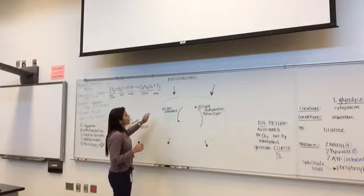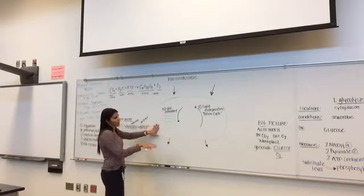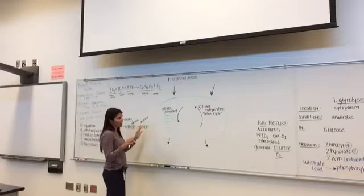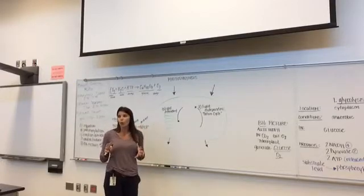And the second process, this occurs in the chloroplast, which we already talked about, occurs in autotrophic organisms, so that means organisms that create their own food.